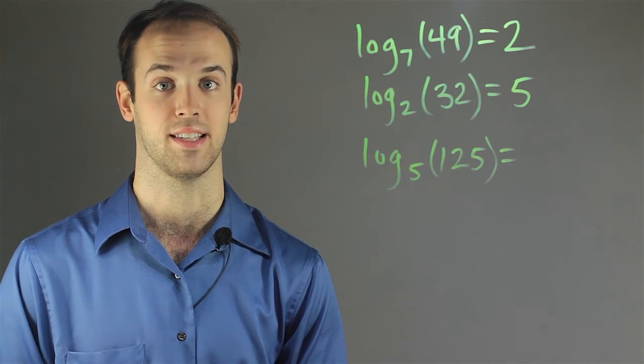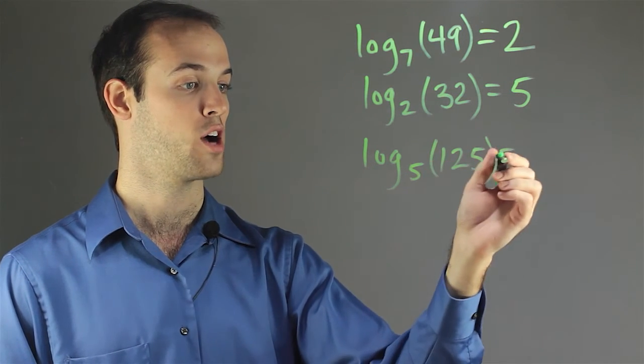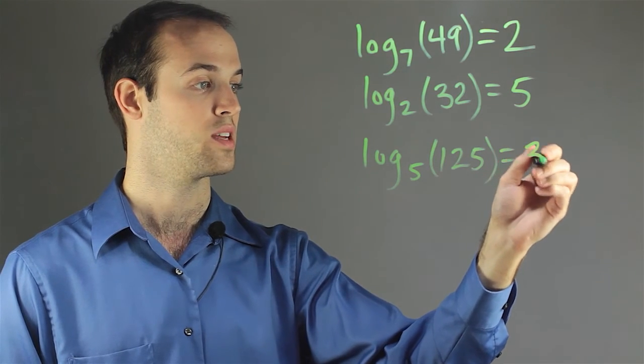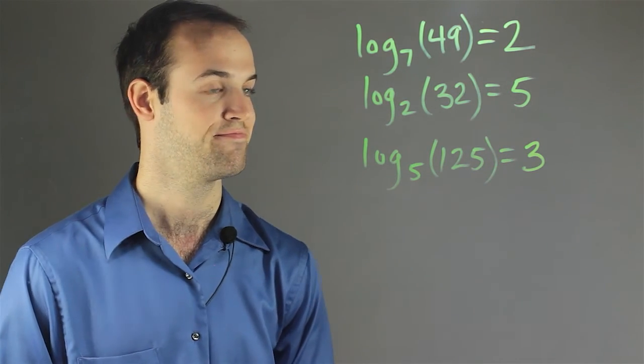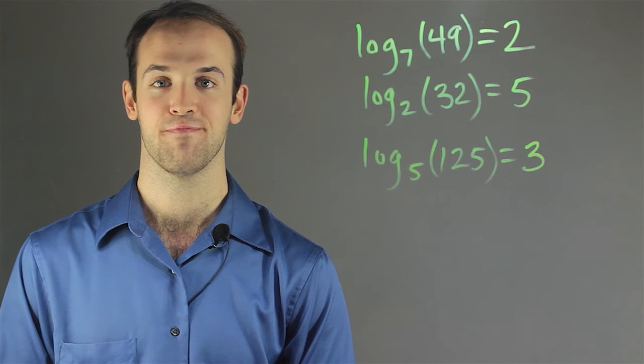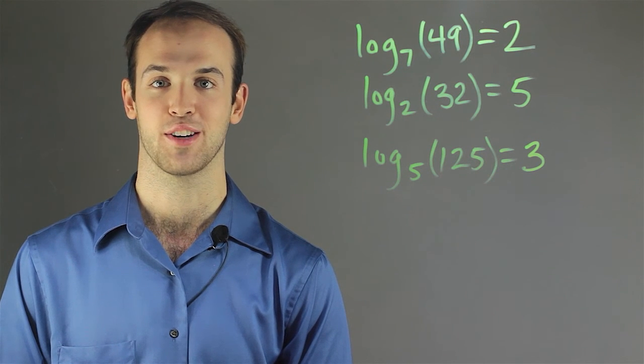5 to the power 3 is equal to 125. So, log base 5 of 125 is equal to 3. I'm Drew Moyer and this is how to use logs and powers.